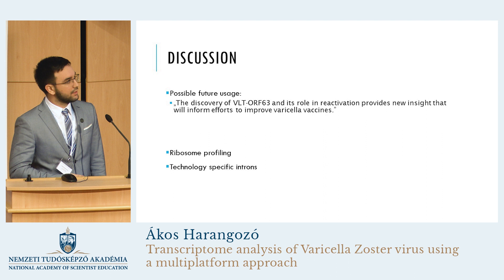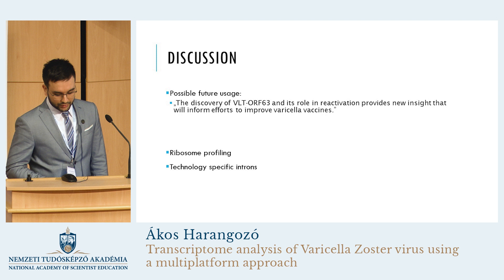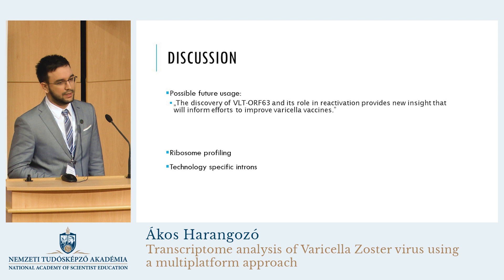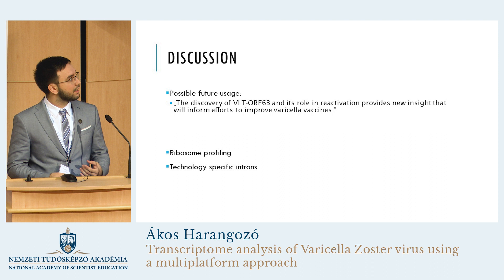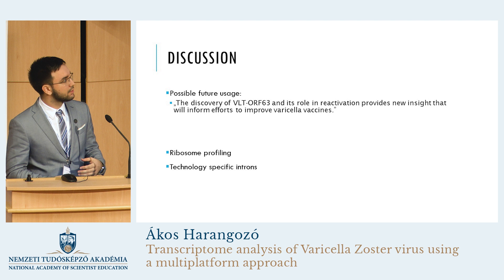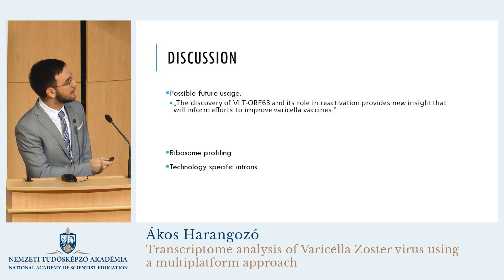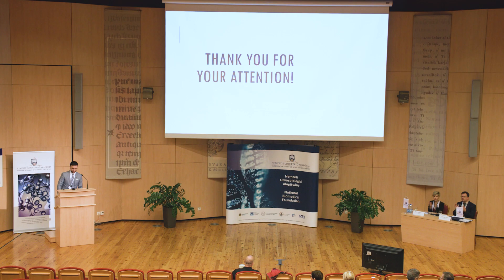Understanding how this transcriptome works can help us solve problems that still exist with this pathogen. For example, shingles is still a problem. A fusion transcript described by us, the VLT-ORF63, was investigated by another research group that found it plays a major role in reactivation of the virus. We see the future of this project in exploring whether these new transcripts are coding or non-coding, and ribosome profiling is a good tool for detecting that. Also, there are some interesting phenomena where some introns seem to be technology-specific — one sequencing technology can find them in very high abundance, but another one completely misses it, and we want to find out why.